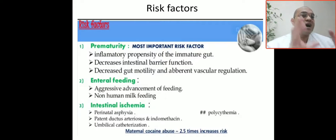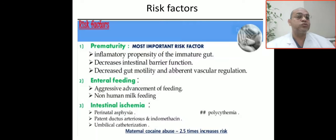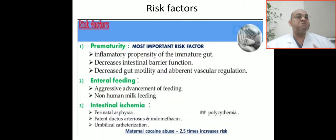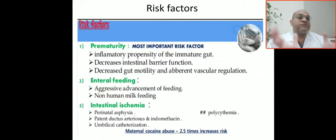Why are premature babies at high risk for necrotizing enterocolitis and perforation? Because of an immature gut, abnormal vascular regulation of the gut, and decreased gut motility. These babies have decreased gut motility, abnormal vascular regulation, and the gut barrier function itself is defective — there is decreased intestinal barrier function.